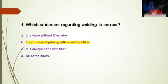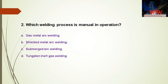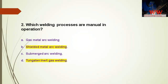Question 2: Which welding process is manual in operation? A — gas metal arc welding; B — shielded metal arc welding; C — submerged arc welding; D — tungsten inert gas welding. The right answer is shielded metal arc welding and tungsten inert gas welding.